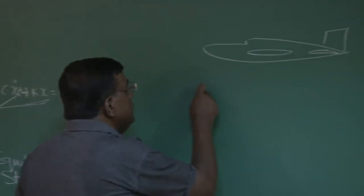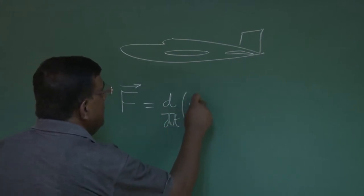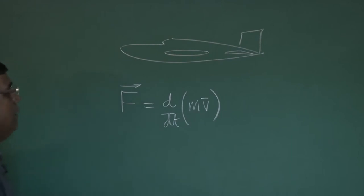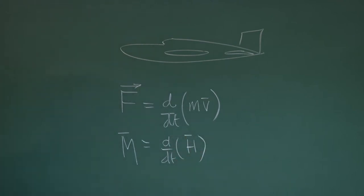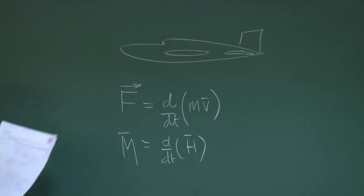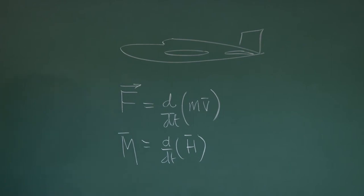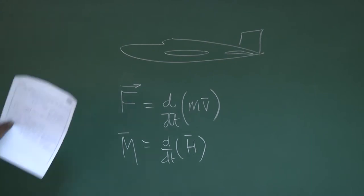In that approach we use Newton's laws of motion: external force equals rate of change of momentum, and external applied moment equals rate of change of angular momentum, where angular momentum is r cross mv. An important point: to implement Newton's laws we must apply them with respect to an inertial frame — a frame having no acceleration. We chose the earth-fixed axis system as the inertial frame.